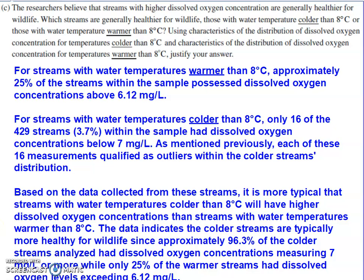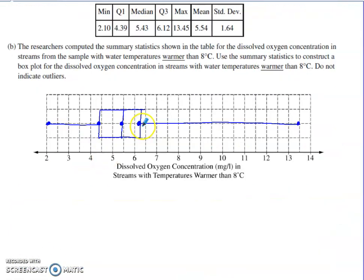The last part says that the researchers think that the streams with higher dissolved oxygen concentrations are typically healthier for wildlife. So which of the streams that we're analyzing here, the colder ones or the warmer ones, seem like they're going to be healthier for wildlife? It was pretty obvious to me—the length of this upper tail for the warmer streams distribution is going to cause this data to have a right skew to it. We would like more of our data on the higher end of these dissolved oxygen concentrations if we are in fact in a situation where that type of stream is healthier for wildlife.